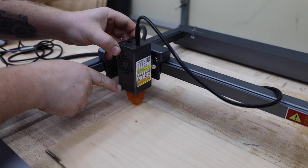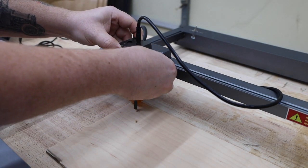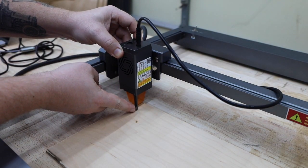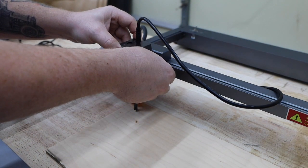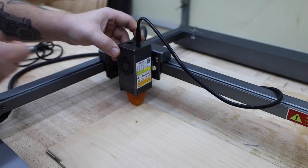You'll notice this little foot on the laser unit itself. This is for focusing. Just lower the laser down until the foot touches your material and tighten the set screw. It's nice not having to worry about losing a setup block like the previous models.